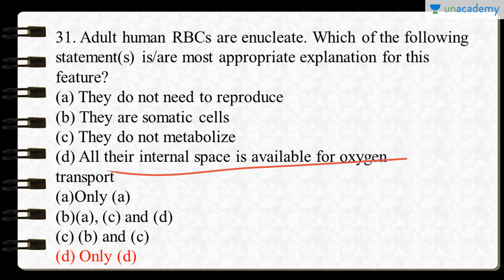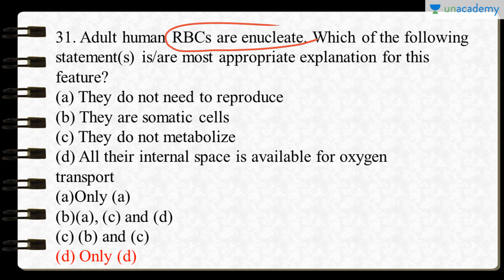Option D is the correct answer because the internal space of RBCs is available only for oxygen transport, especially during high oxygen demand or sudden emergencies. The nucleus degenerates during maturation, providing more space for the oxygen-carrying pigment hemoglobin, which carries oxygen from RBCs to various parts of the body.